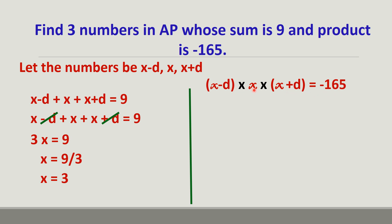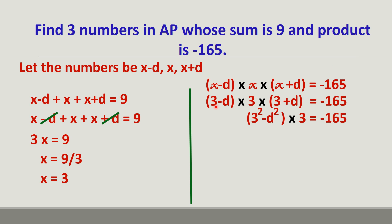So (x − d) × x × (x + d) = −165. Since x = 3, substituting: (3 − d) × 3 × (3 + d) = −165. Using the identity (a − b)(a + b) = a² − b², we get (3² − d²) × 3 = −165, which is (9 − d²) × 3 = −165.